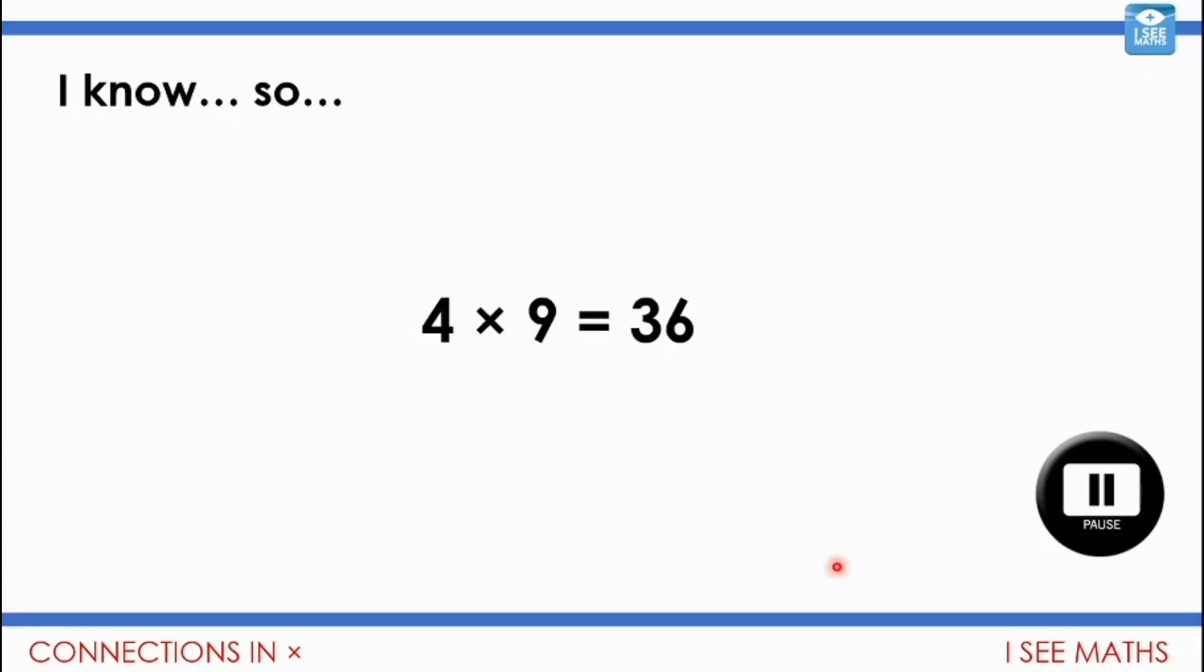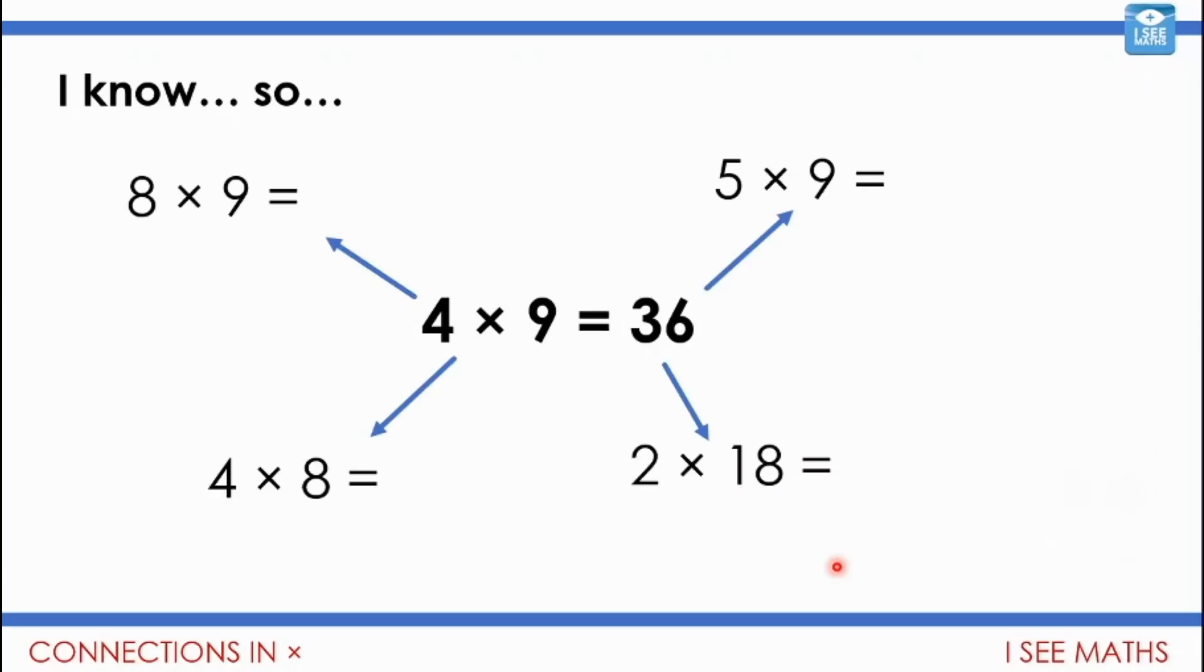Okay, so I hope you've managed to find some different connections there. Now I'm going to show you some possibilities. So let's say, well I know four nines, how can you use that to work out eight nines, or five nines, or two times eighteen, or four times eight.